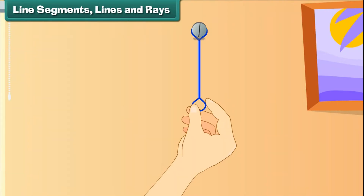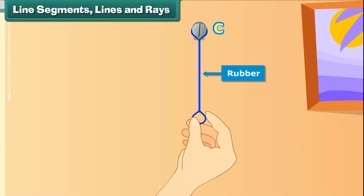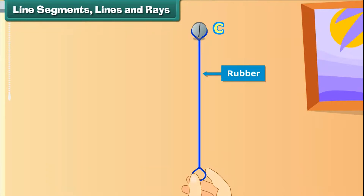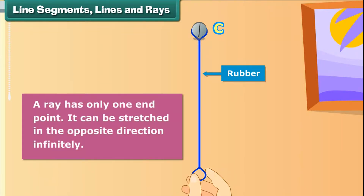Look at this thin strip of rubber. Let us nail it to the wall and name the point C. The other end of the rubber is free. Let us stretch it — first a little, then a little more, and then some more. What we get is a ray. A ray has only one end point. It can be stretched in the opposite direction infinitely.